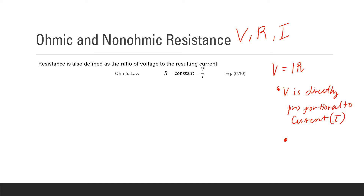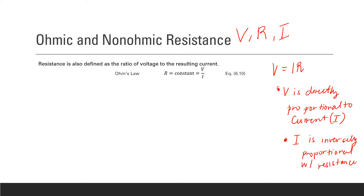Another relationship we can get from this law is that current, I, is inversely proportional with resistance. This suggests that the greater is the resistance in a conductor or in a circuit, the lesser is the current. And the lesser is the resistance in a circuit, the greater is the current.